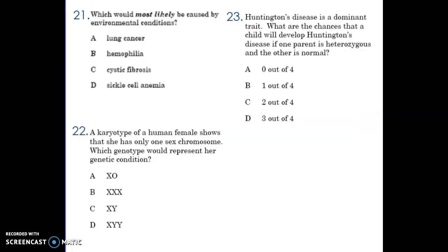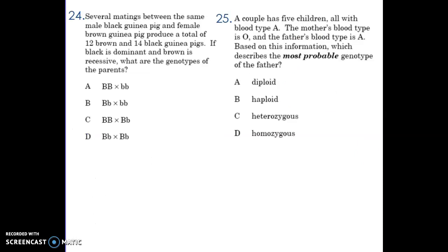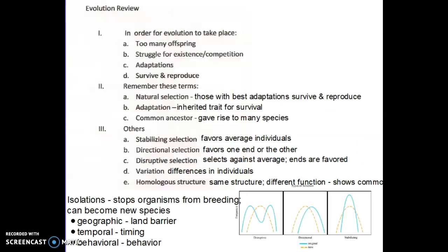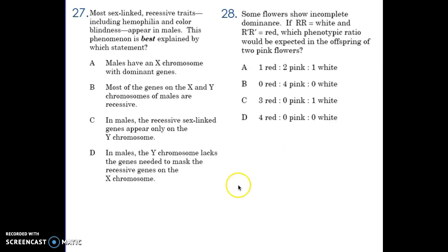That's about it for genetics. Look back over through Google Classroom if there's something else you need to review. Most importantly, know how to do a Punnett square — remember each box is 25%. These are some practice questions you can go through and give a try. If you need the answers to these, I'll be glad to provide them. Let me know if you have any questions.